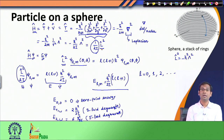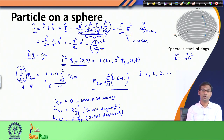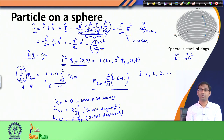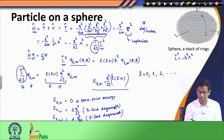So far, all systems discussed — particle in a box, harmonic oscillator, particle in a ring, particle on a sphere — have involved one particle. However, in molecular systems relevant to chemistry, we need to deal with more than one particle. We will now extend our discussion from one-particle to two-particle systems and see how the quantum mechanical solution changes.